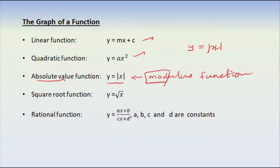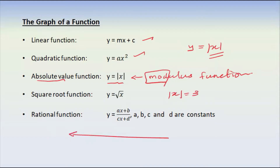Now, mod x is equal to 3. It will be 0 and 1. It will be minus 1, minus 2, minus 3.